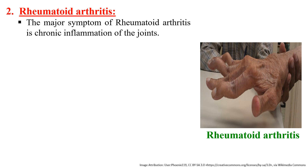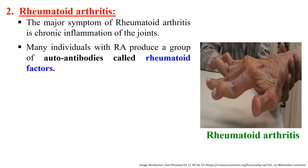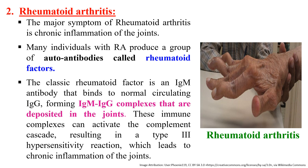Next is rheumatoid arthritis, a disease of joints in which the joints become stiff and inflamed. This is due to the production of autoantibodies generally called rheumatoid factors, which are typically IgM. This IgM binds to another autoantibody, IgG, forming an IgM–IgG complex. This complex gets deposited in the joints and results in a hypersensitivity reaction, ultimately leading to inflammation of the joint.